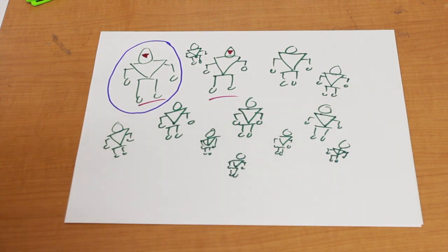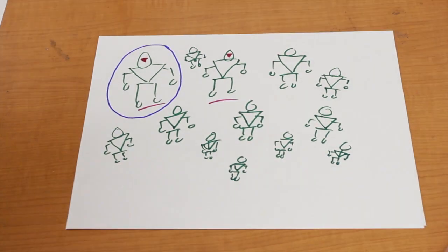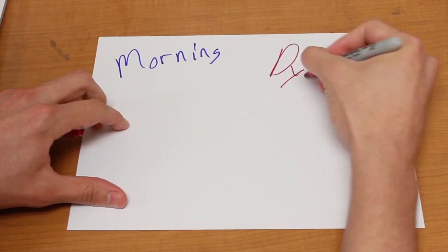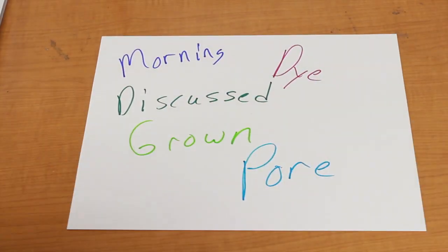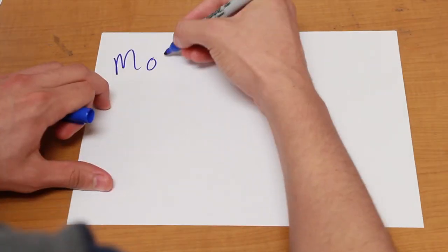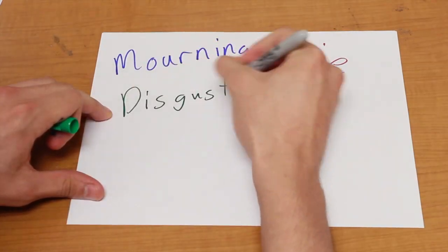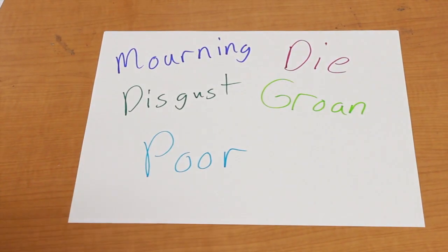In one study researchers read words to subjects and asked them to write the words down. Mourning, die, disgust, groan, poor. That's what a non-depressed person might write down. However someone prone to depression, well they might have heard something else.